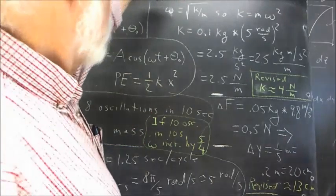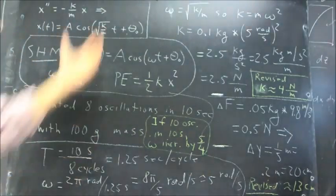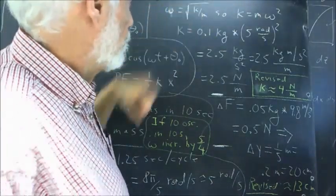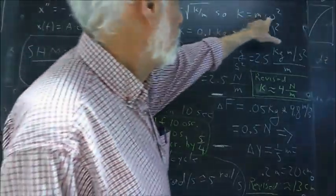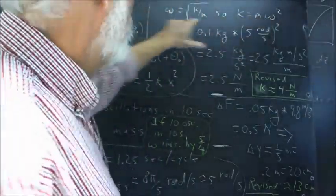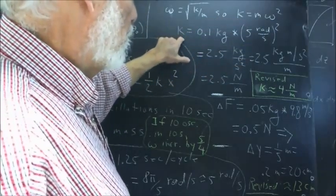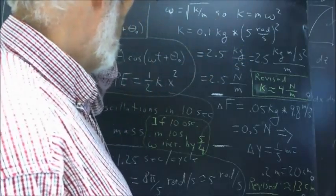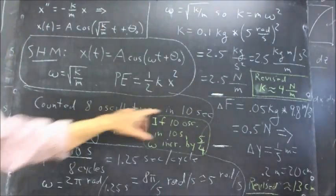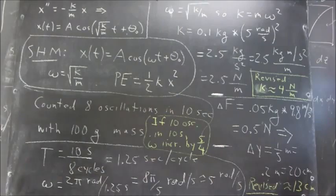So what can we determine from this? Well, we took some time to determine this, but omega is the square root of k over m, so that k is m omega squared. And since we know the mass and omega, we can determine k. We get k through a very straightforward set of calculations equal to 2.5 newtons per meter, based on the eight oscillations in ten seconds.